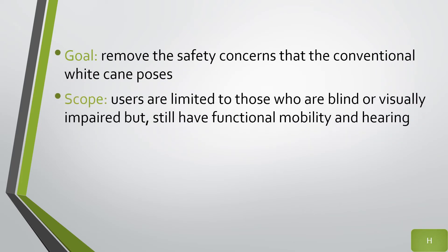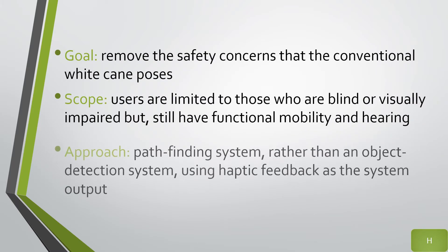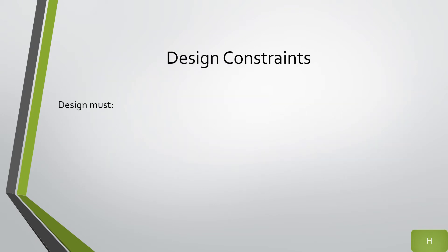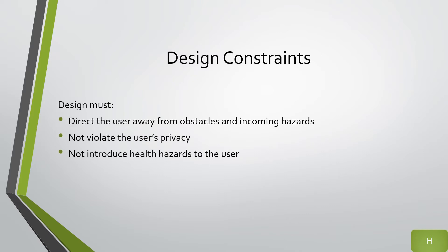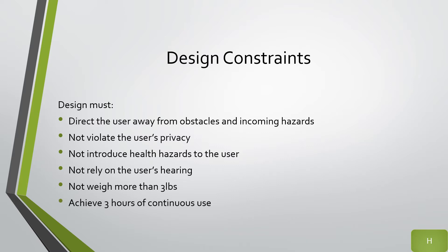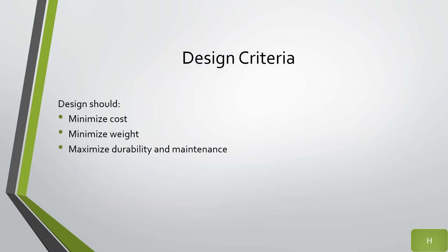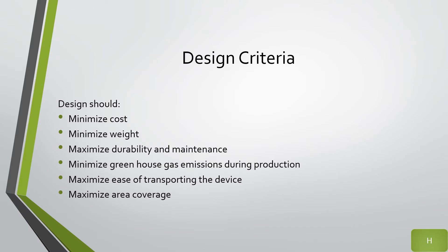Our goal is to remove the safety constraints that the conventional white cane poses and to create a path-finding system that will help navigate the blind and visually impaired. The main design constraints are that it should direct the user away from obstacles and incoming hazards, not weigh more than three pounds, and achieve three hours of continuous use. The main design criteria are minimizing cost and weight while maximizing area coverage for object detection.